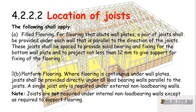So basically what that means is under all load-bearing walls we need to have two joists. If you've got a cut-in floor where the walls are sitting directly onto your joists, you need two joists under each wall that runs parallel to the joists. For a platform floor, external walls running parallel require two joists, load-bearing walls parallel to joists require a joist underneath, and there's no need for a joist underneath an internal non-load-bearing wall.